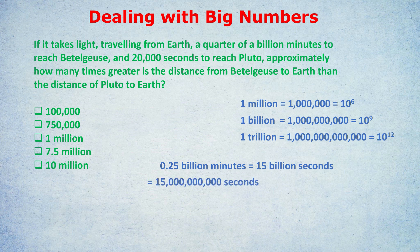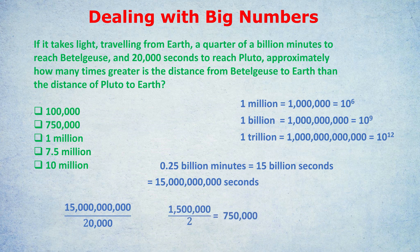We've got one slight problem: 15 billion is 15 followed by nine zeros, but that won't fit in the calculator. How are we going to do 15 billion divided by 20,000? Here's where cancellation comes in. We've got four zeros in the denominator, so let's cancel out those four zeros with four of the zeros in the numerator. Instead of having nine zeros at the top, we now only have five zeros. So it becomes 1.5 million divided by 2, which is 750,000. The distance to Betelgeuse is 750,000 times greater than the distance to Pluto from Earth.